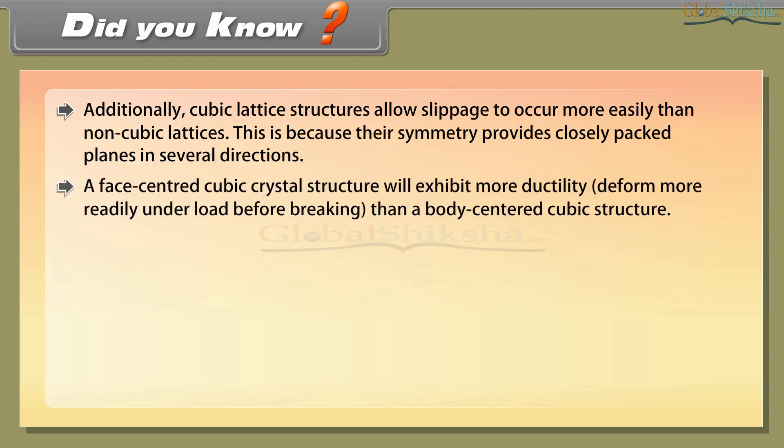A face-centered cubic crystal structure will exhibit more ductility—deform more readily under load before breaking—than a body-centered cubic structure. The BCC lattice, although cubic, is not closely packed and forms strong metals.